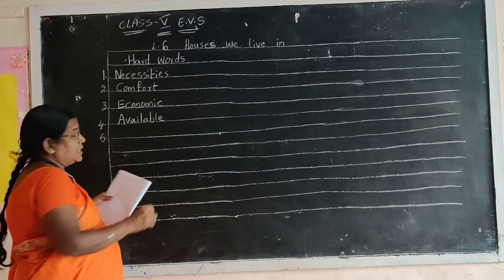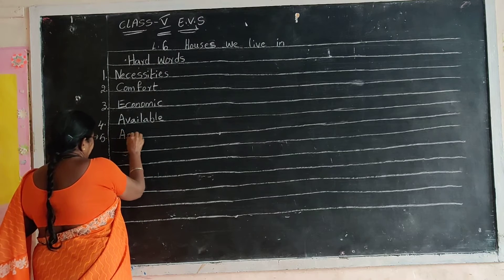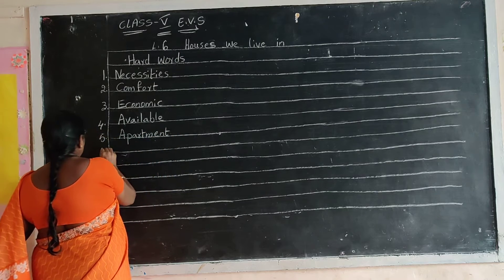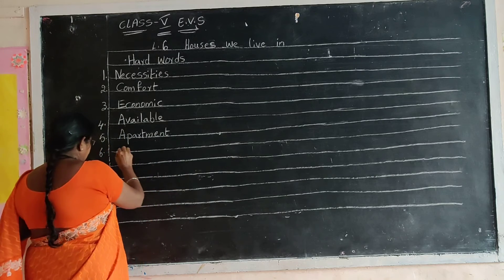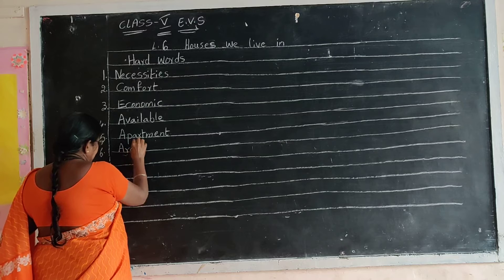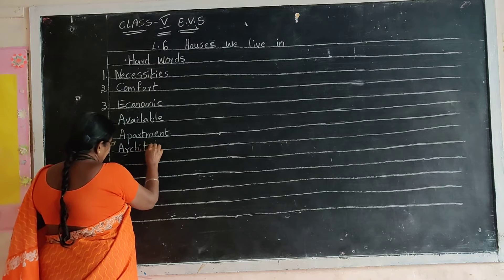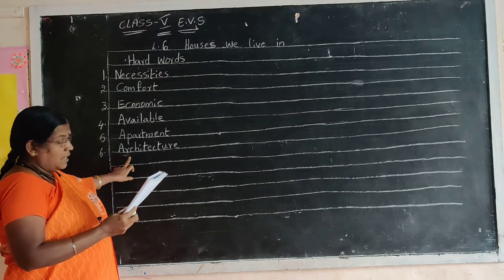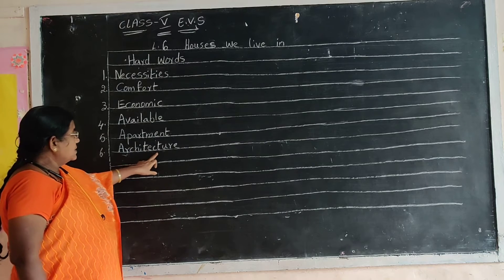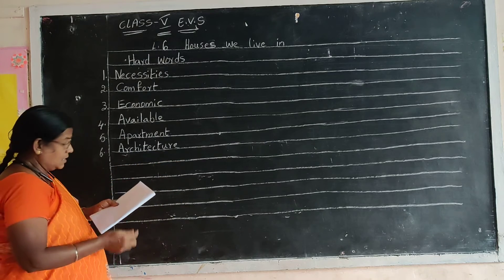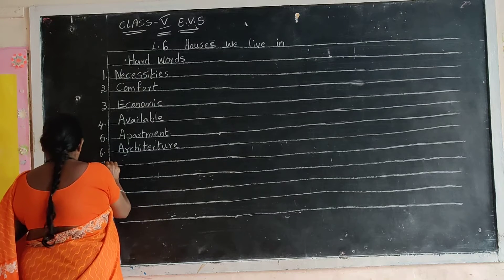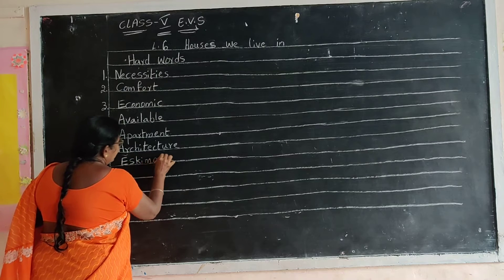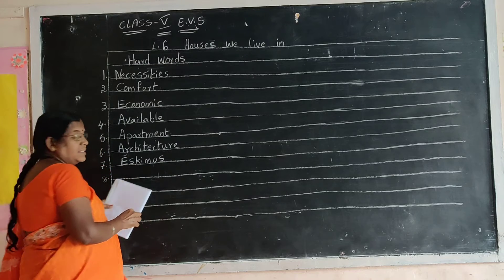Fifth one: Apartment. A-P-A-R-T-M-E-N-T. Apartment. Sixth one: Architecture. A-R-C-H-I-T-E-C-T-U-R-E. Once again: A-R-C-H-I-T-E-C-T-U-R-E. Seventh one: Eskimos. E-S-K-I-M-O-S. Eskimos.